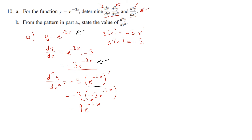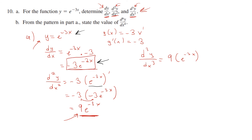The third derivative means taking the derivative of the second derivative. That gives d³y over dx³ equals 9 times negative 3 times e to the power of negative 3x, which equals negative 27e to the power of negative 3x. So the three answers are negative 3eˉ³ˣ, 9eˉ³ˣ, and negative 27eˉ³ˣ.